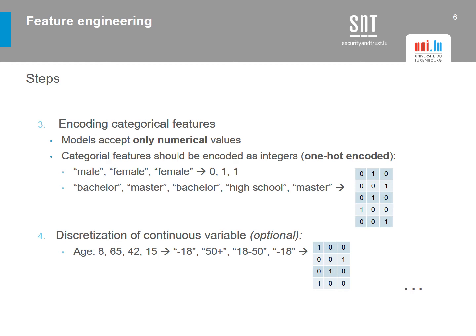The third step is to encode categorical features. This is really important because machine learning models accept only numerical values. If we have categorical features, we need to encode them as numerical values. In the previous example, gender was encoded as F for female and M for male, but we cannot give these letters directly to the model. One type of encoding is one-hot encoding — for example, male is encoded as 0 and female as 1. If we have only two possible values, we can transform it this way.